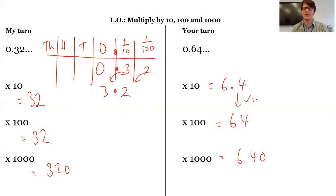And again, just notice as I go down each time, my answer is getting 10 times bigger, because I'm timesing by another lot of 10. 100 is the same as 10 times 10. 1,000 is 10 times 10 times 10.